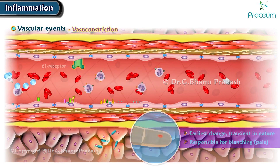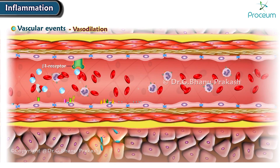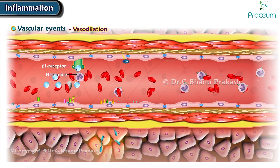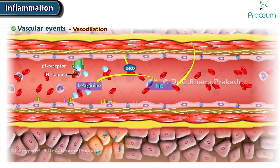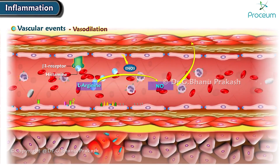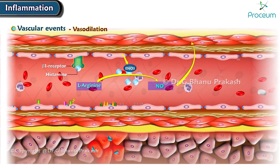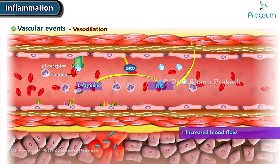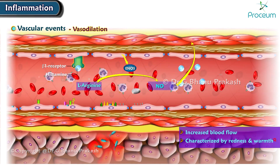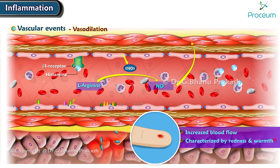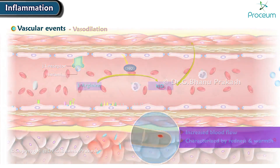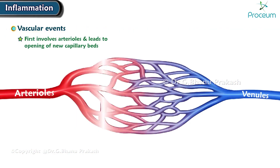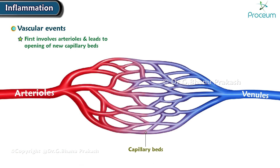Next, there's vasodilation, caused by nitric oxide and notably histamine. Alterations in the vascular caliber leads to increased blood flow, characterized by redness and warmth. Vasodilation first involves the arterioles and then leads to the opening of new capillary beds.